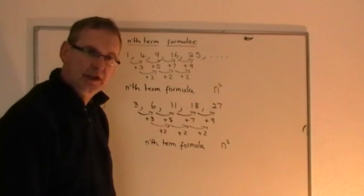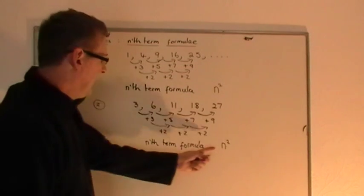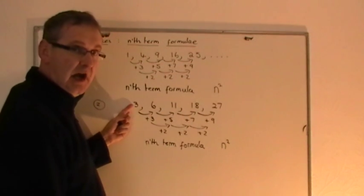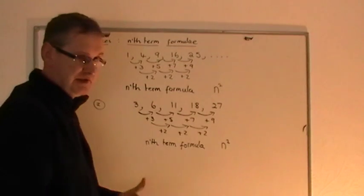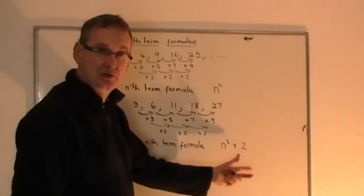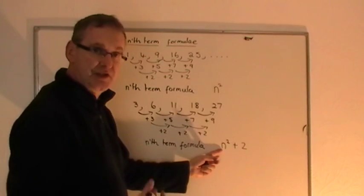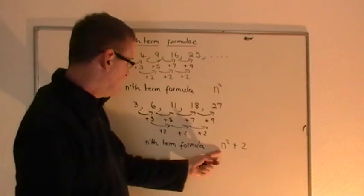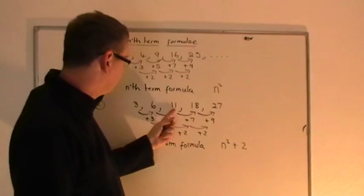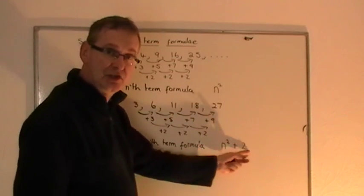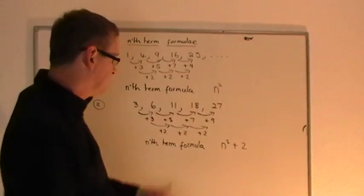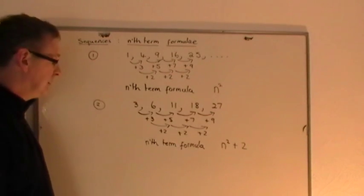So how do we work out the n squared formula? Let n equal 1: 1 squared is 1, but we need 3. If I add 2, I get 3 — let's try that. If n is 2: 2 squared is 4, add 2, you get 6 — that's what we've got. If n is 3: 3 squared is 9, add 2, you get 11 — it works. n=4: 4 squared is 16, add 2 gives 18 — works. n=5: 5 squared is 25, add 2 gives 27 — it works. So the nth term formula is n squared plus 2.